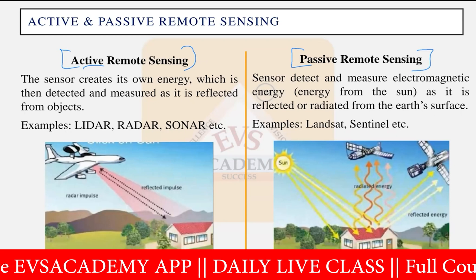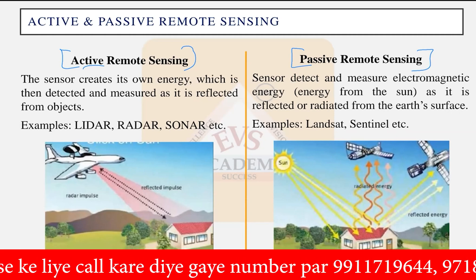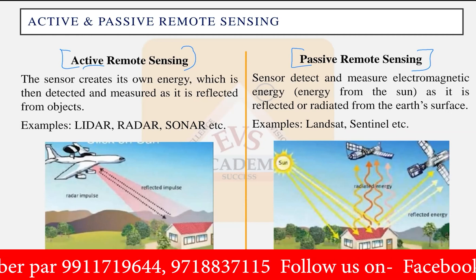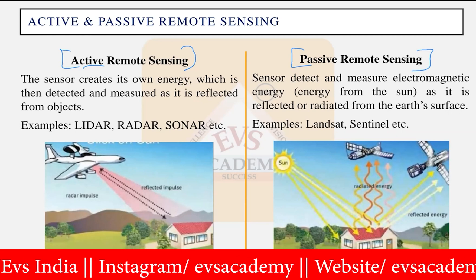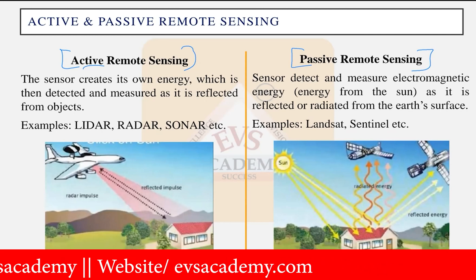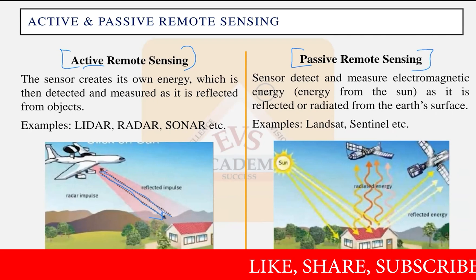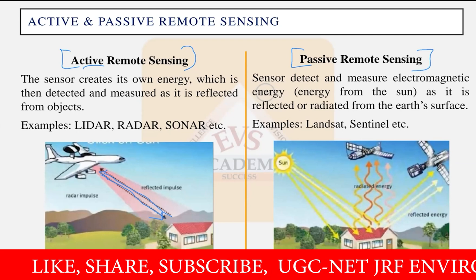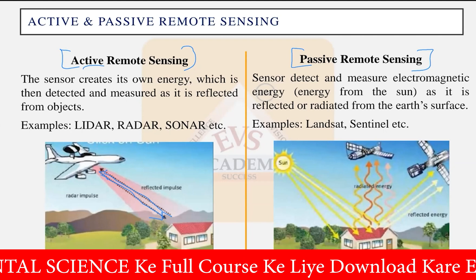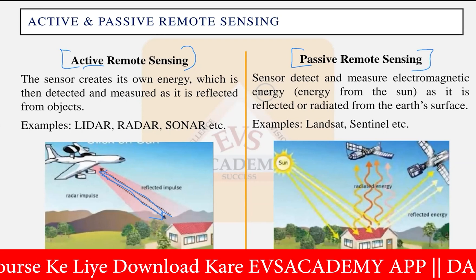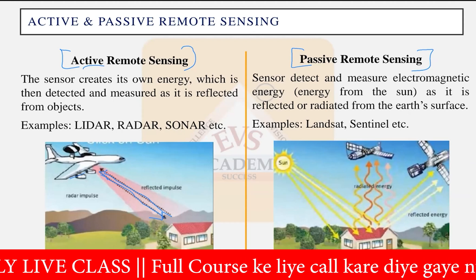This is similar to an echo in a mountain range — the sound interacts with the hills and comes back. In active remote sensing, the electromagnetic radiation reacts with objects on the earth's surface, and the reflected electromagnetic radiation is sensed back. The radar impulse interacts with houses, trees, and mountains, and the reflected impulse returns to the aircraft and is sensed. The sensor creates its own energy, which is then detected as it reflects back from objects.